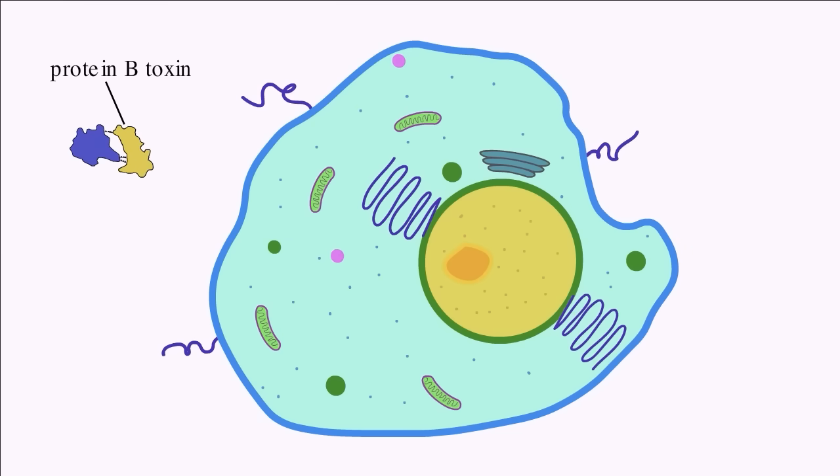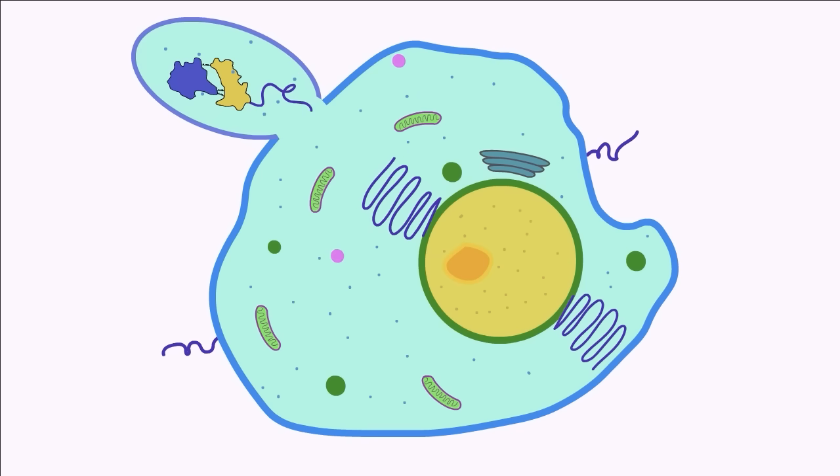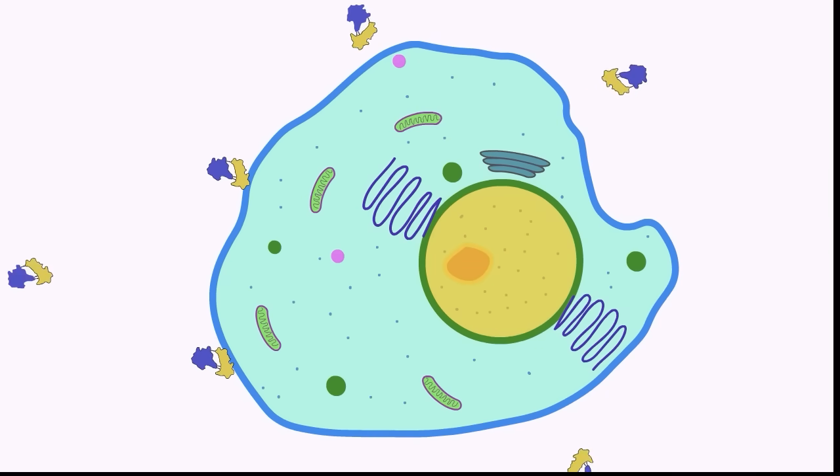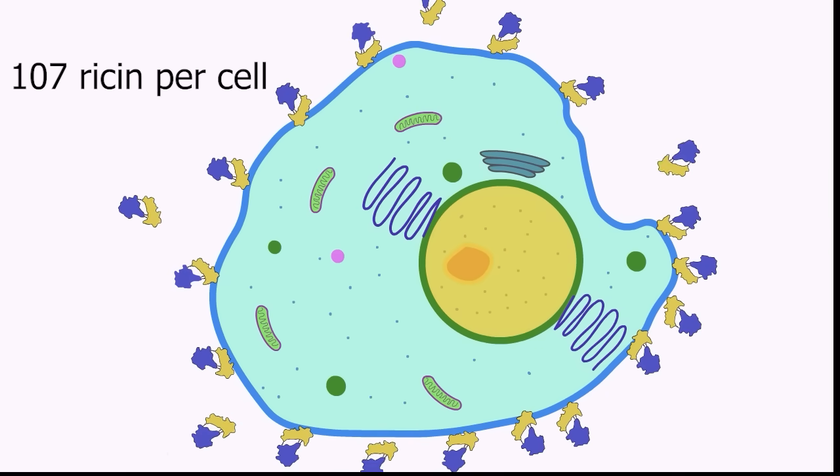Once in the body, the ricin toxin B protein binds to a glycoprotein called N-acetylgalactosamine on the surface of cells. When toxin B attaches to this glycoprotein, it triggers the cell to engulf the entire ricin protein into the cell. Chemical kinetic studies have found about 107 ricin molecules can bind to the surface of a single cell.